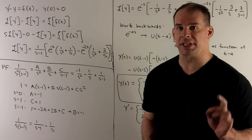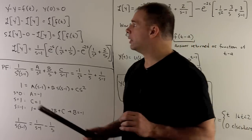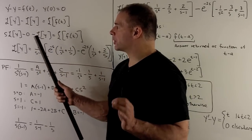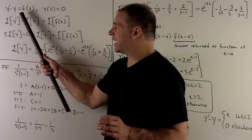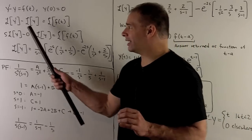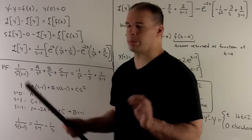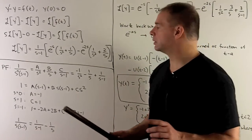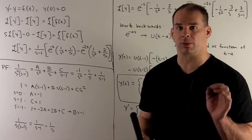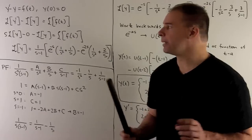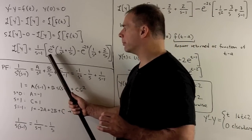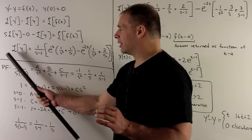Now that we have the Laplace transform of f of t, we take the ODE and apply the Laplace transform to both sides. We use the derivative rule to write the Laplace transform of y prime as s times the Laplace transform of y minus zero. The left-hand side becomes s minus one times the Laplace transform of y. We drop in our expression on the right-hand side and divide by s minus one to isolate the Laplace transform of y.